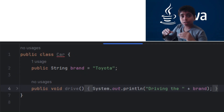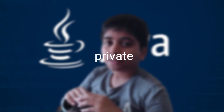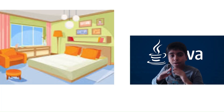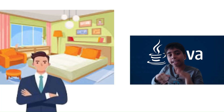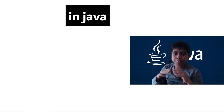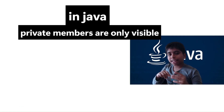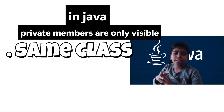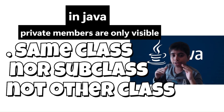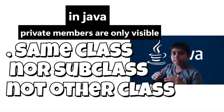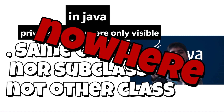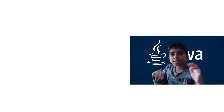Now let's go to the next one: private. Private is like your bedroom — only you have the key. In Java, private members are visible only within the same class — not subclasses, not other classes, not the same package — no one else.